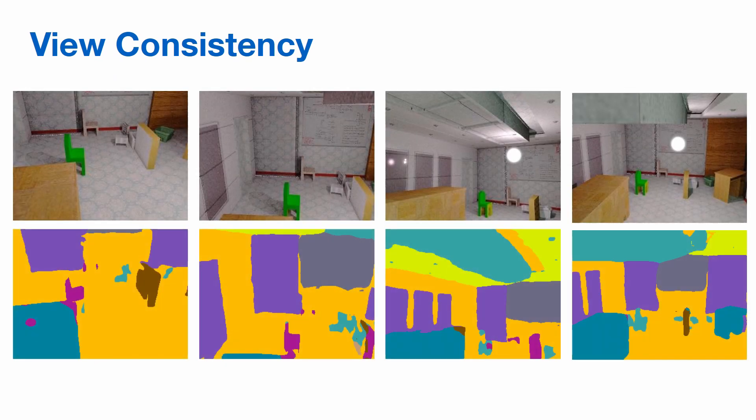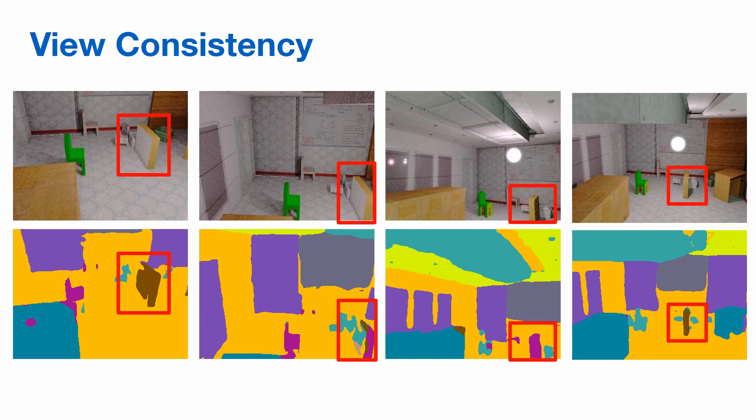We propose a novel active learning method for semantic segmentation that exploits inconsistencies in model predictions across views as a measure of model uncertainty.